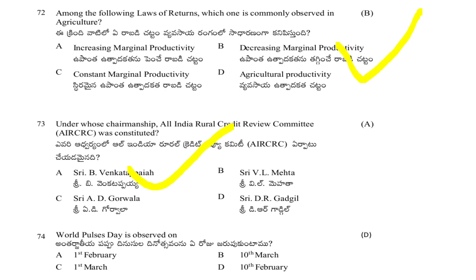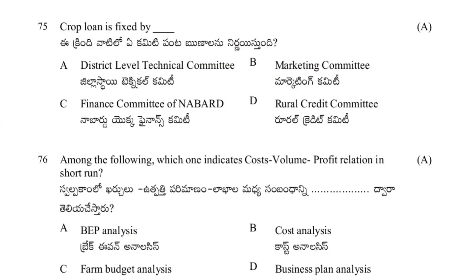World Pulses Day is observed on: 1st February, 10th March, 1st March, or 10th February. The answer is 10th February — World Pulses Day is observed on 10th February.